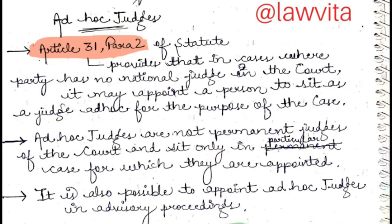Next is Ad Hoc Judges under Article 31 Paragraph 2 of the statute. It provides that in cases where a party has no national judge on the court, that party may appoint a person to sit as a judge ad hoc for the purpose of that case. Ad hoc judges are not permanent — they serve only for that particular case for which they are appointed.